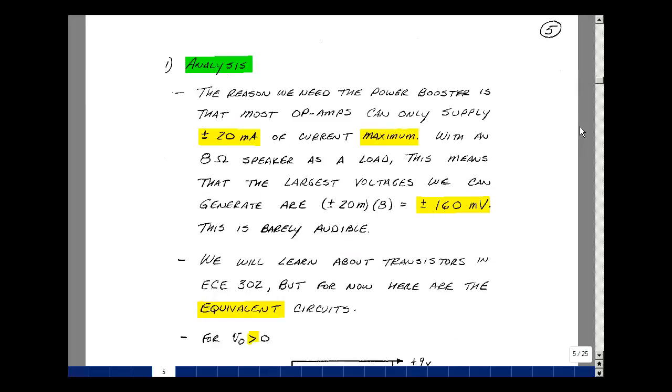Most op-amps can only provide about 20 milliamps of current, except for power op-amps with much bigger physical cases. With an 8-ohm speaker, if you put 20 milliamps through it, plus or minus, you have a swing of 160 millivolts peak, and peak-to-peak twice that. Put that across the speaker, it's barely audible. I put these power booster transistors on our op-amp to increase current output.